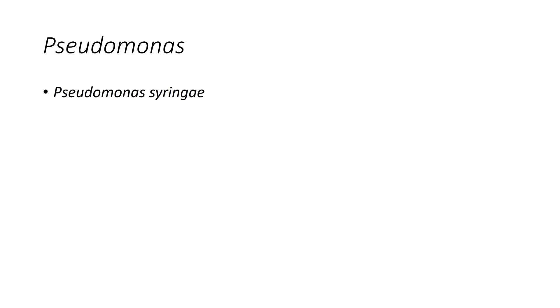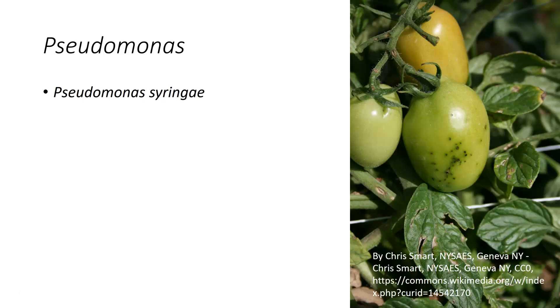Pseudomonas. There are a lot of different Pseudomonas. Some are quite problematic on humans, but this group that is problematic on plants is not problematic on humans. The predominant one we find on plants is Pseudomonas syringae. It gives you a speckled sort of infection. You can see on this tomato how infection enters through the stomata. When you cut tomatoes open and see black veins, that is actually a bacterial infection — and it is not a problem for humans.